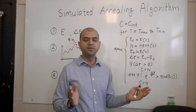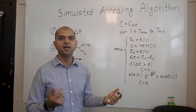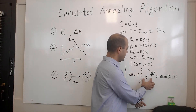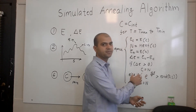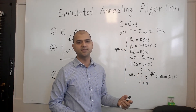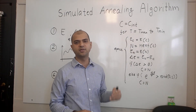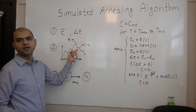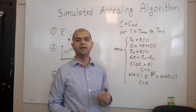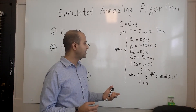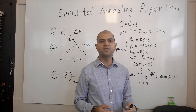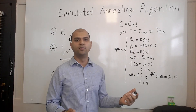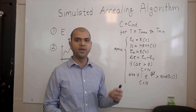On either extreme are two other algorithms: hill climbing and random walk. If we remove the probability and temperature factor and always accept only the good moves, that's hill climbing — a greedy algorithm that always moves towards a better solution. Such algorithms are prone to getting stuck in local minima. On the other end is a random walk, where we don't care about how good a move is and just continue exploring the space. Such algorithms never converge and will probably never give you the best optimal solution.